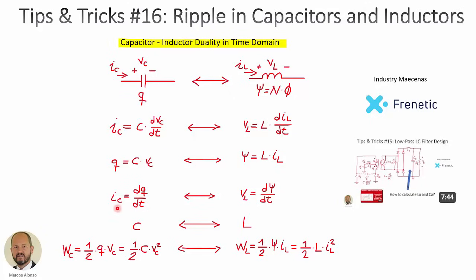Also, in a capacitor, the current through the capacitor is the derivative of the charge with respect to time. Again, current is equivalent to voltage and charge is equivalent to flux linkage. So in an inductor, the voltage across the inductor is the derivative of the flux linkage with respect to time. And of course, capacitance is equivalent to inductance.